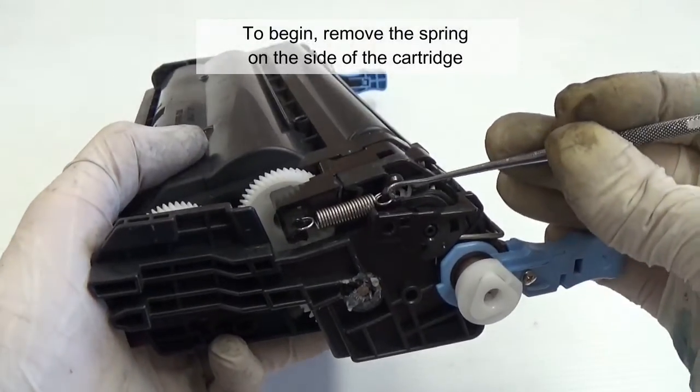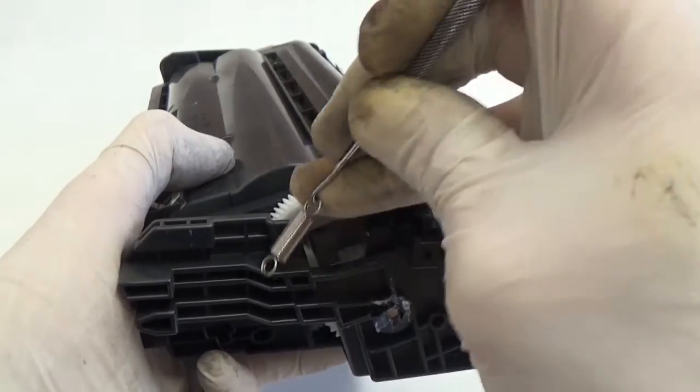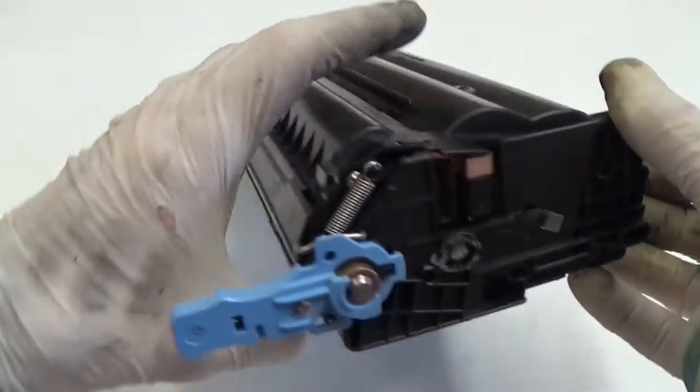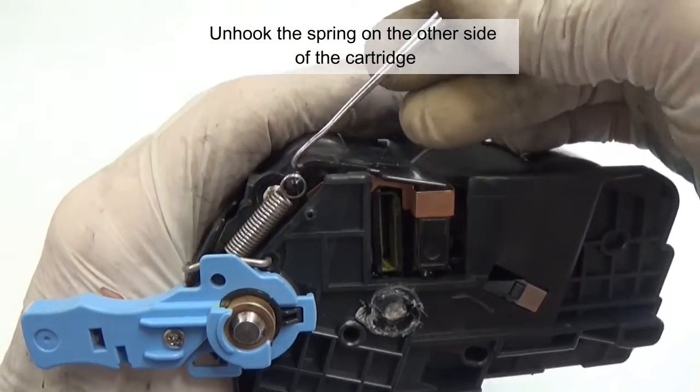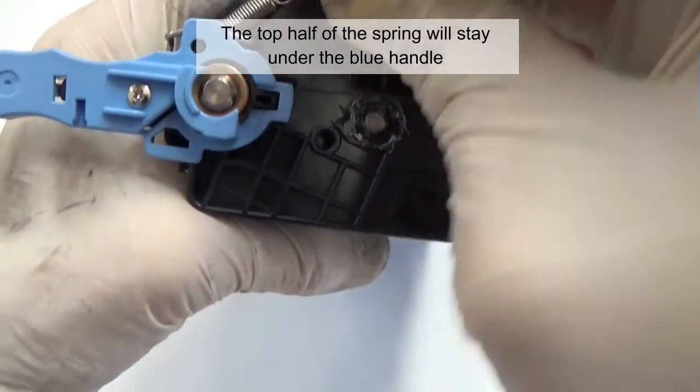To begin, remove the spring on the side of the cartridge. Unlock the spring on the other side of the cartridge. The top half of the spring will stay under the blue handle.